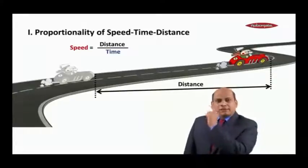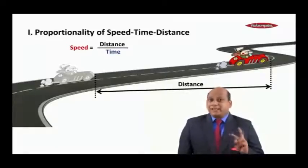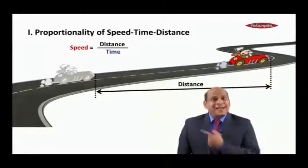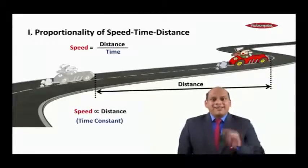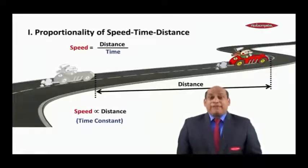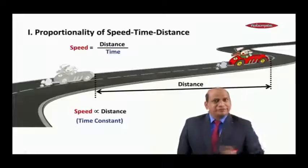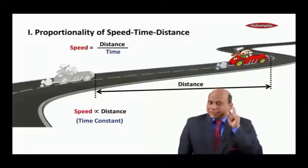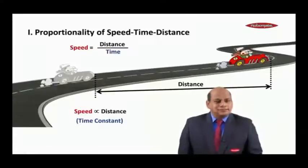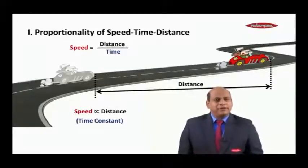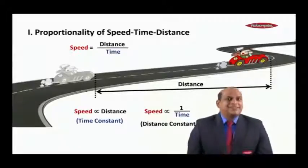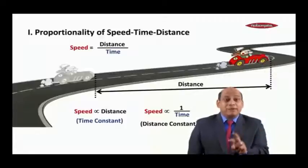If you look at this formula carefully, what is the relationship between speed and distance? Speed and distance are directly proportional, provided time is constant. What this means is if you travel at a higher speed, then in the same amount of time you are expected to cover a longer distance. And if you were to travel at a very slow speed, then in the same time you are expected to cover a shorter distance. So speed and distance are directly proportional.